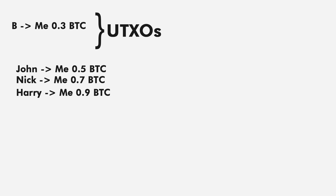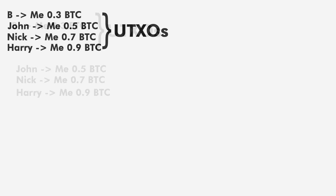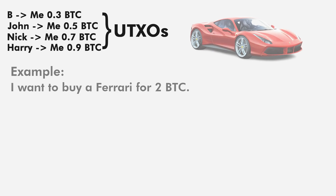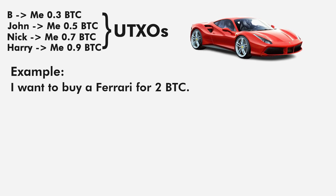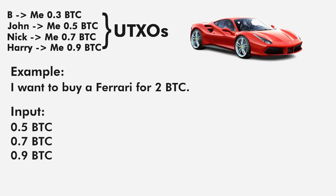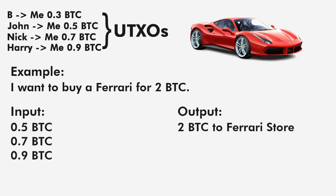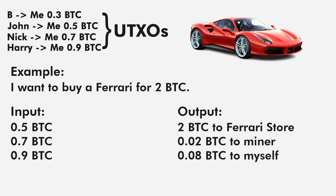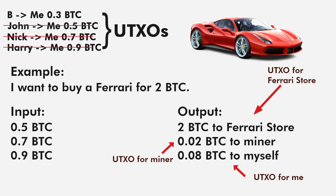Let's say Zon sent me 0.5 bitcoin, Nick sent me 0.7 bitcoin, and Harry sent me 0.9 bitcoin. All these transactions will be added to my UTXOs. Suppose I want to buy a Ferrari for 2 bitcoin and I want to give 0.2 bitcoin as a transaction fee. In input we need at least 2.2 bitcoin including the transaction fee, so I will pick these three transactions. In output, 2 bitcoin will be paid to the Ferrari store and 0.2 bitcoin will be paid to the miner as a transaction fee.